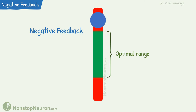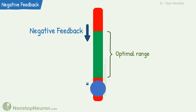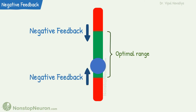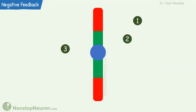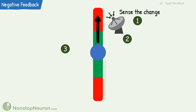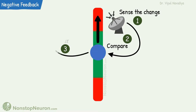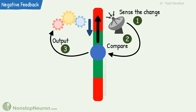If the parameter increases too much, feedback decreases it. And if there is too much decrease, the feedback increases it. There are three main parts of any feedback system. The first is to sense the change in the parameter. The second is to compare the change with a reference value or a setpoint for that parameter. And third is to produce an output signal that initiates the response to bring the parameter back towards the setpoint.